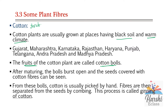From these cotton bolls, cotton is usually picked by hand. Fibers are then separated from the seeds by combing. This process is called ginning of cotton — the separation of cotton fiber from the seeds by combing. Machines are also used for ginning.